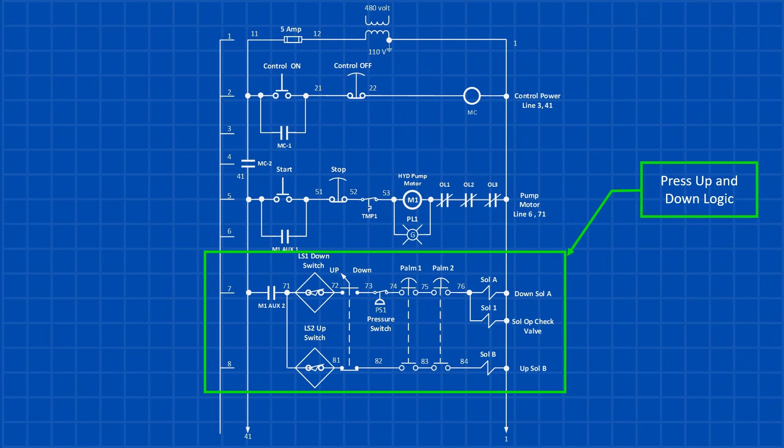For the press to move up, auxiliary contact 2 for the pump motor must be closed, ensuring the pump is running. The press up switch must also be inactive, as indicated by the normally closed press up proximity switch. Additionally, the up-down selector switch needs to be set to the up position.